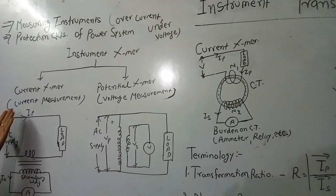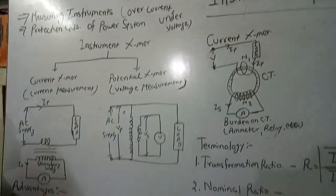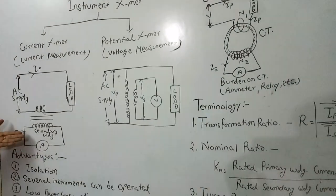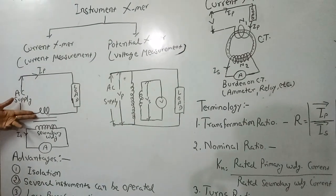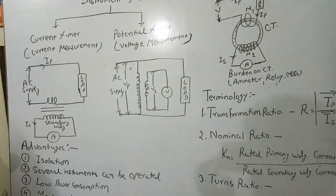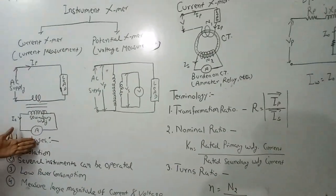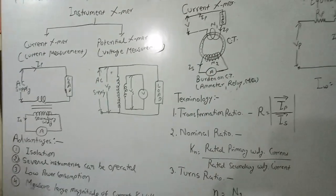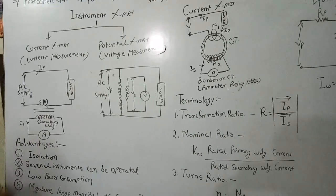As the name specifies, a current transformer is used to measure current and a potential transformer is used to measure voltage. The current transformer has a primary winding with approximately 1 or 2 turns and a secondary with many turns, which reduces the current in the secondary winding. It is connected to an ammeter or relay — known as the burden on CT — which measures the current in the secondary winding.